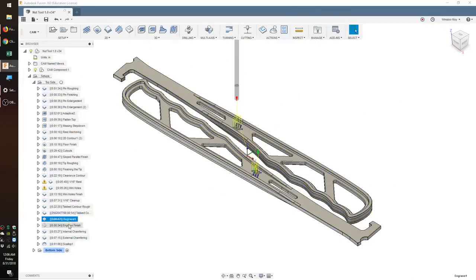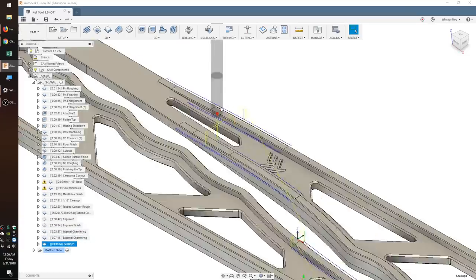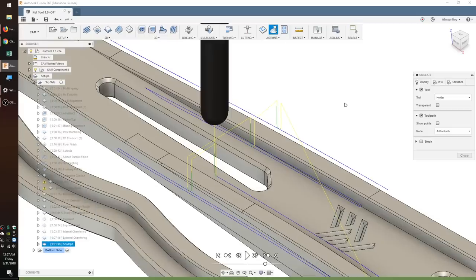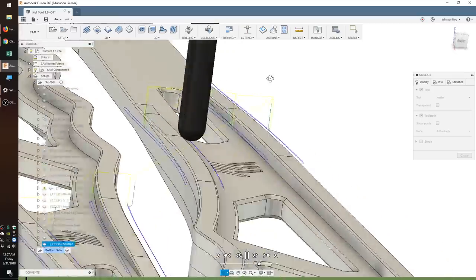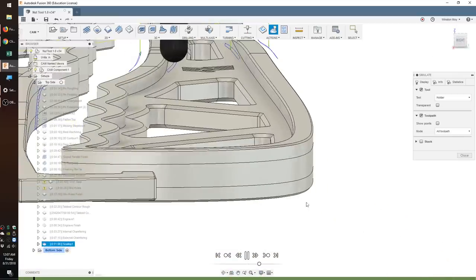Next, I would use a 90 degree V-bit to engrave my logo and also chamfer all the horizontal edges. For the tapering portions of the nut tool where there was a 3D chamfer, I'd employ a scallop tool path with a ball end mill. Probably not ideal, but it seemed like an okay idea at the time.